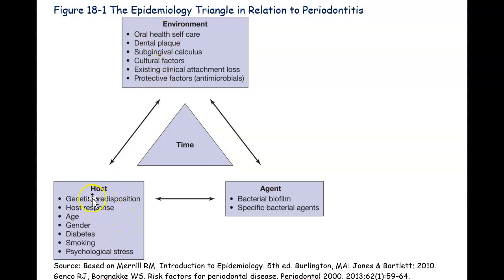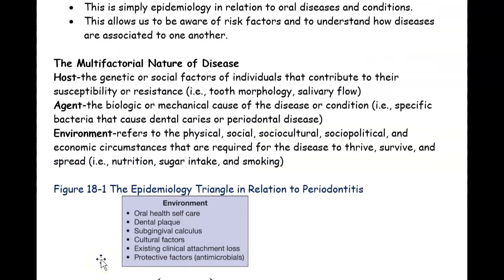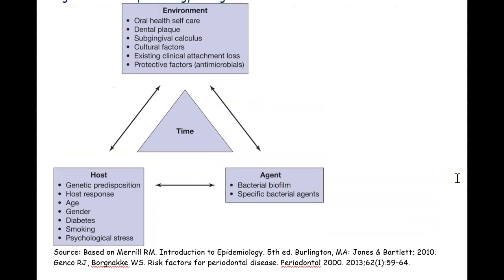When looking at the host, there are additional factors such as tooth morphology. If a person's teeth are crowded, they're more likely to get periodontitis. If they have low salivary flow, they're more likely to get caries. So there are lots of factors in play — not just bacteria.